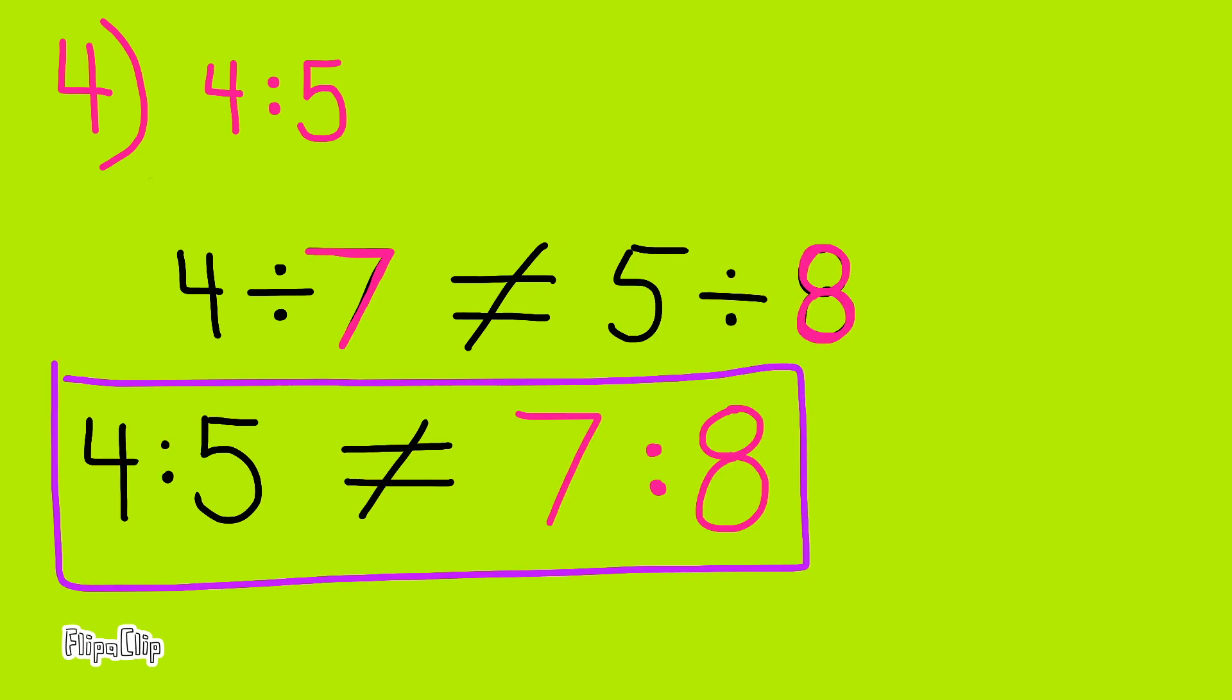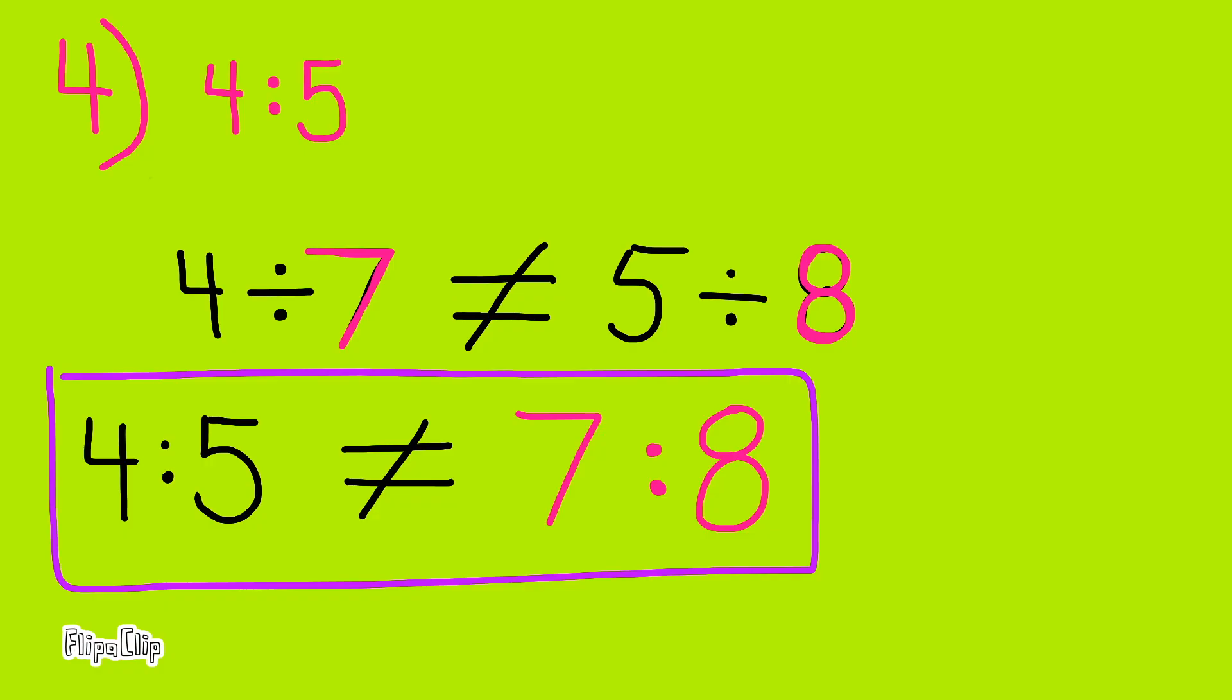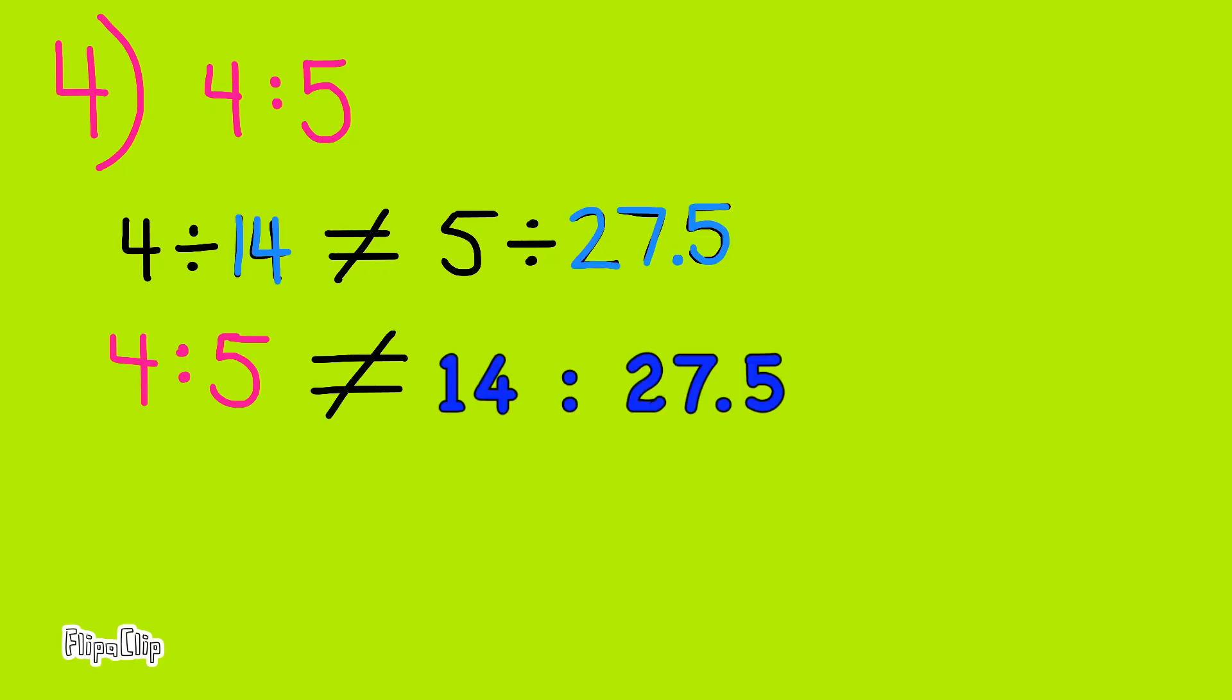Here's the next one. Since 4 divided by 14 does not equal 5 divided by 7 and 5 tenths, then the ratio of 4 to 5 does not equal the ratio of 14 to 27 and 5 tenths.